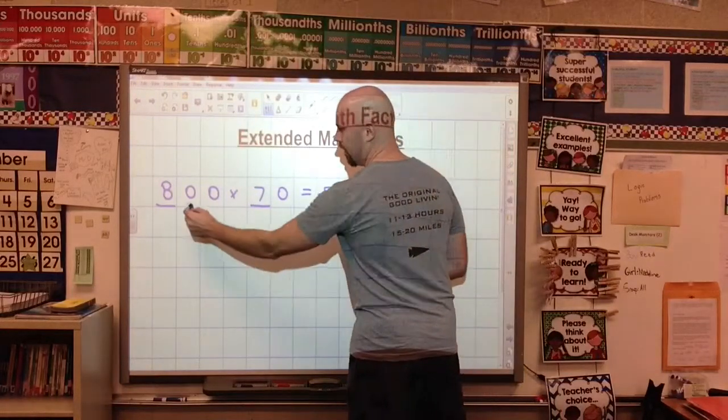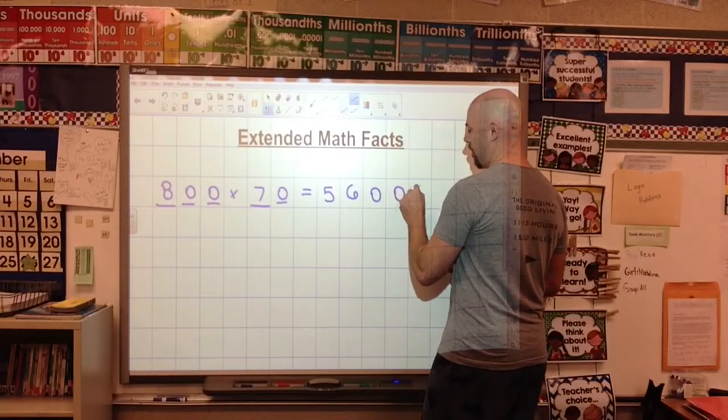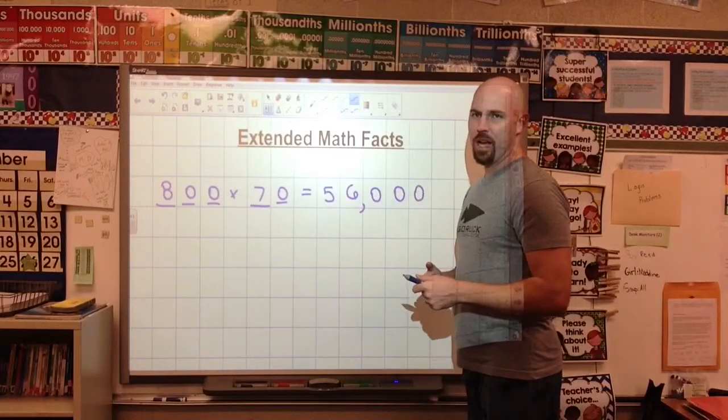And then they add on 1, 2, 3 zeros to it. So that's how you extend a math fact.